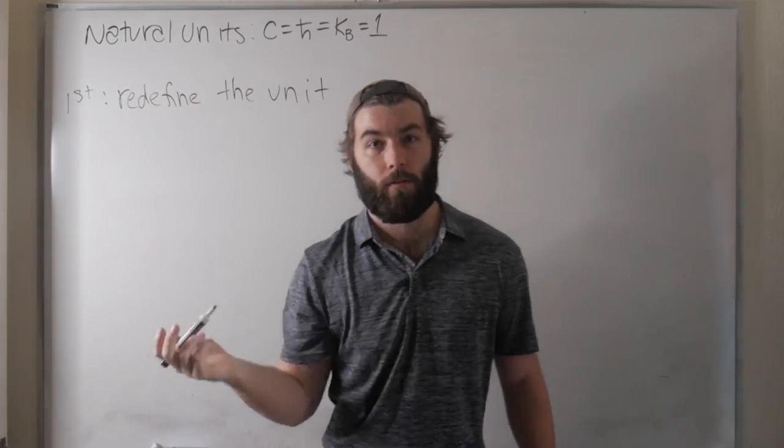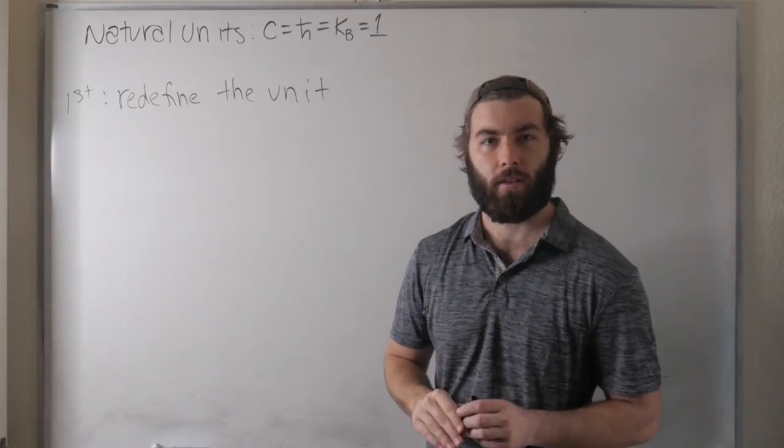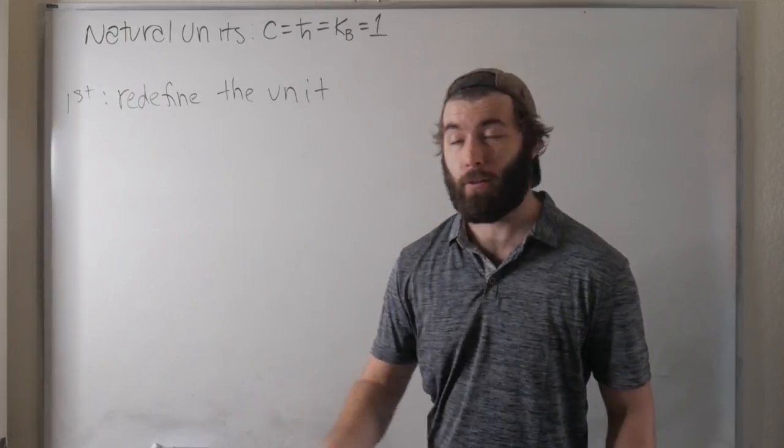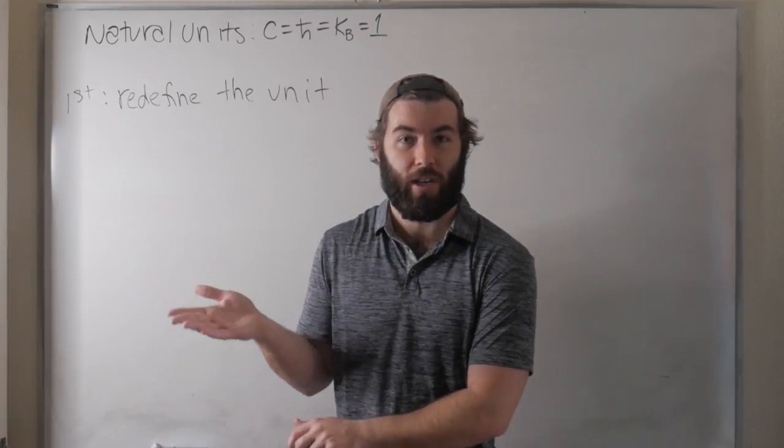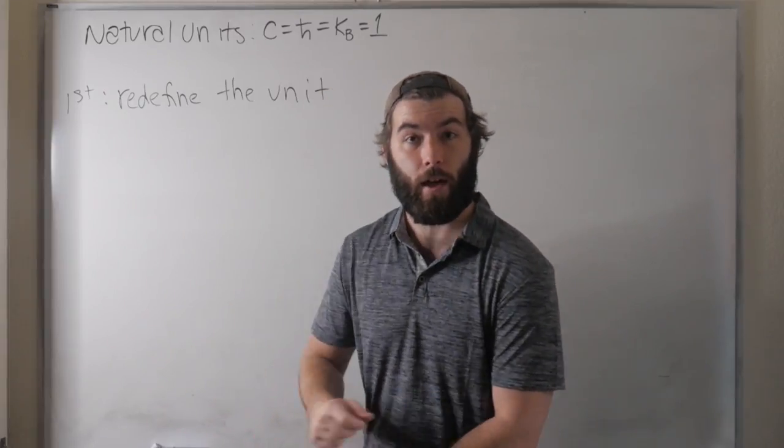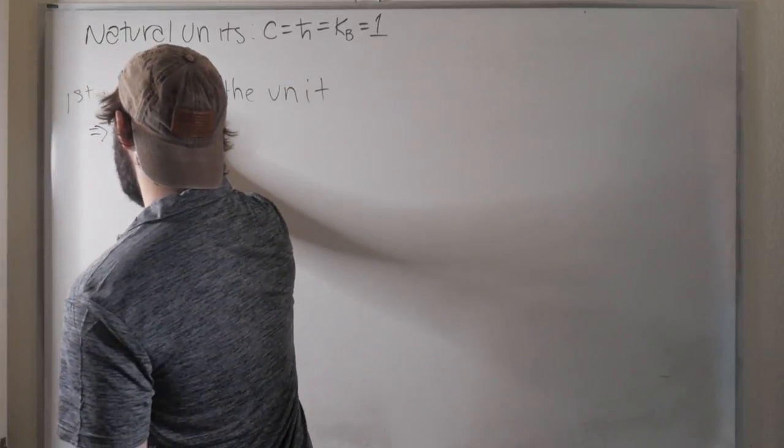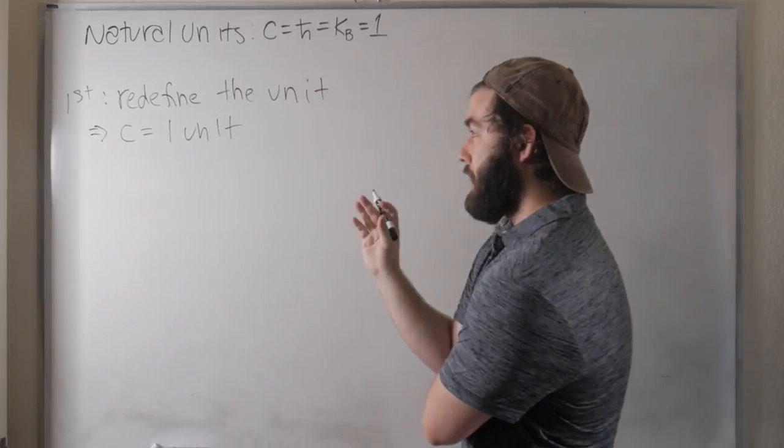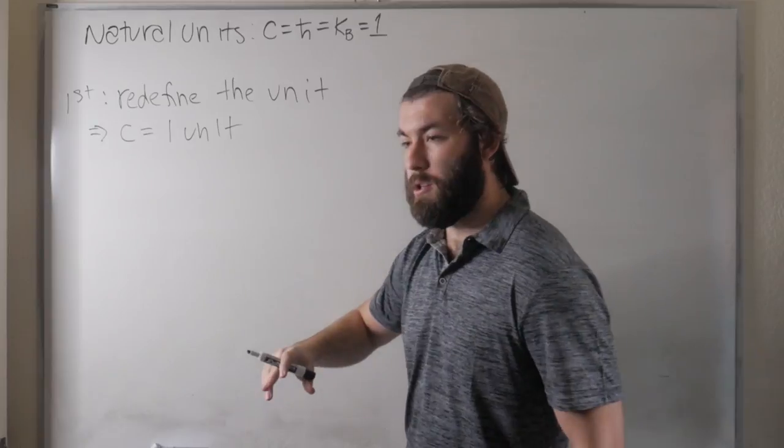The speed of light is roughly 300 million meters per second. But what if we don't use meters per second? What if we use schmeckels per second, or meters per super second, or whatever? I don't care what you call it. If I use a different system of units, then we can choose a system of units where it's one of that unit. So a consequence of doing this would be that c is one of that unit.